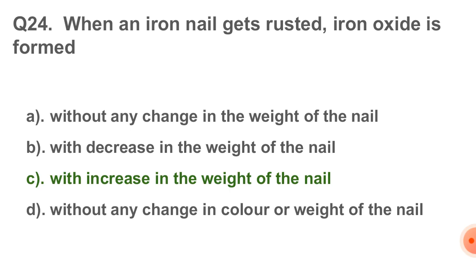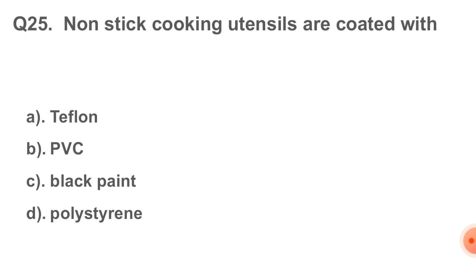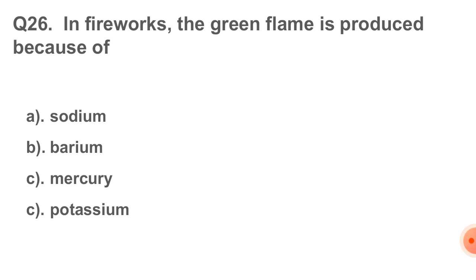Question number 25: non-stick cooking utensils are coated with. Correct answer option number A, that is Teflon. Question number 26, the last question: in fireworks, the green flame is produced because of. Correct answer option number B, that is barium.